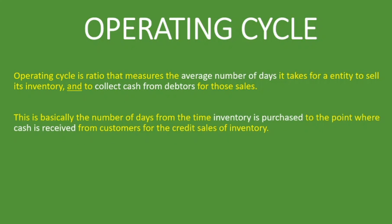Basically, this is what we're looking at: the average number of days from the time you purchase inventory until the point you receive the cash from customers where you have sold to them on credit, you wait for a number of days, and you get the money from them. So from the time you purchase inventory to the time you receive the money for those inventory from the people you've sold to on credit. And this is very similar to the cash conversion cycle.